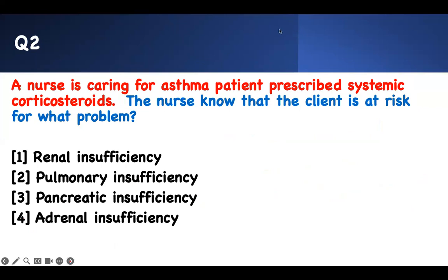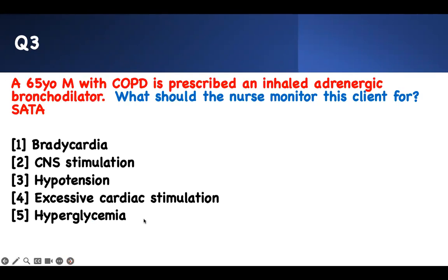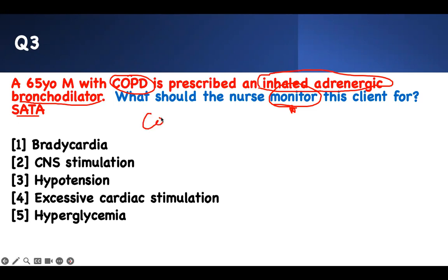Number three — the last one. Key concept, once again, the same topic. What should the nurse monitor? Pay attention to that word: monitor. It says select all that apply. A 65-year-old with COPD is prescribed — I did not give you the medication name, but I describe it — an inhaled adrenergic bronchodilator. Rewrite the question. COPD patient is taking an inhaled adrenergic bronchodilator. What are you going to monitor? I just draw an arrow and see which direction it goes.